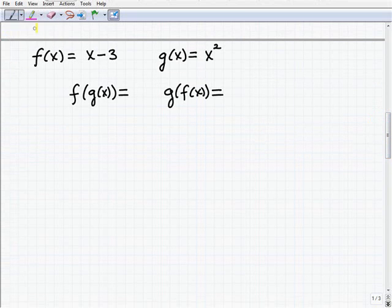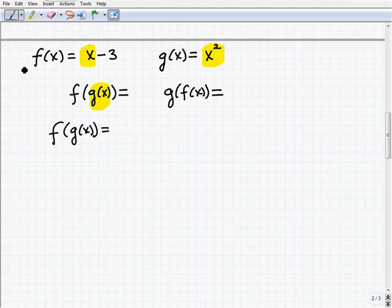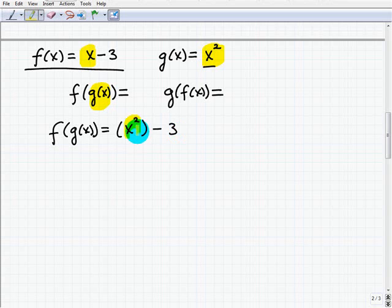We have f of g of x. Let's take a look at this one now. We're going to plug in the g of x function, which is this, into the f function. So f of g of x is: my f function is x minus 3. However, this x I'm going to plug in the g function which is x squared, so it's going to be x squared minus 3. That's the g function and I plugged in for that x. Now we just simplify. Like I said, some of these are very easy. So f of g of x is simply x squared minus 3.